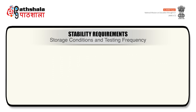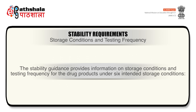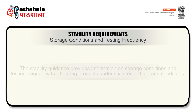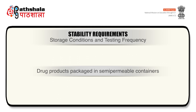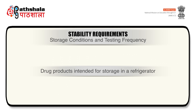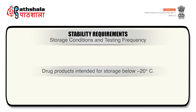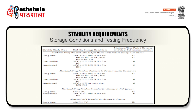Now we are talking about storage conditions and testing frequency. The stability guidelines provide information on storage conditions and testing frequency for drug products, covering drug products packaged in impermeable containers, drug products packaged in semi-permeable containers, drug products intended for storage in a refrigerator, drug products intended for storage in a freezer, and drug products intended for storage below minus 20 degrees centigrade. The storage conditions are summarized in the table shown on your screen.